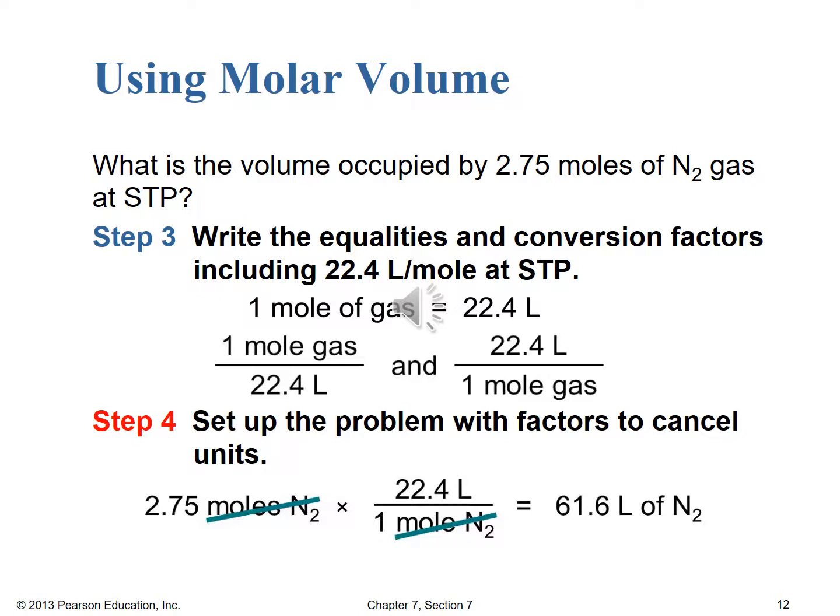Moving into step three, we know that one mole of gas equals 22.4 liters, and since we start in moles of nitrogen, we want the form with 22.4 liters in the numerator over one mole in the denominator. Moving on to step four, we plug in the numbers and cancel moles of nitrogen to be left in liters of nitrogen, finding that we end up with 61.6 liters of nitrogen. That's roughly three times the molar volume because we have almost three moles of nitrogen at STP. This relationship of 22.4 liters equaling one mole is only true at STP — can't stress that enough.